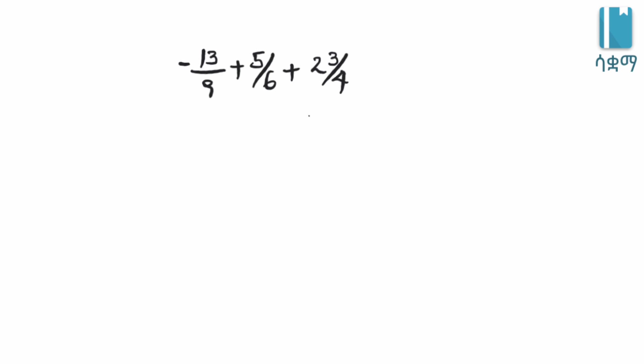Rational numbers include fractions. We have mixed fractions and normal fractions. For example, 2 and 3 over 4 as a normal fraction: 2 times 4 is 8, plus 3 is 11, giving us 11 over 4.